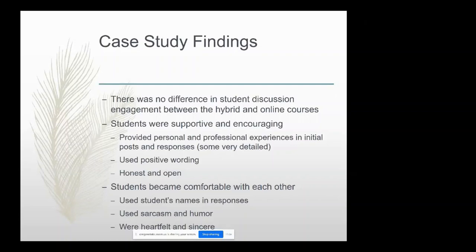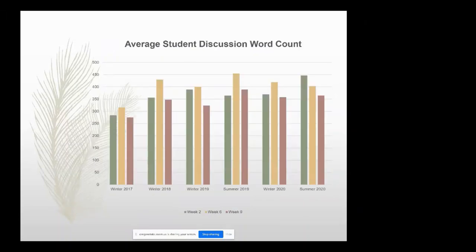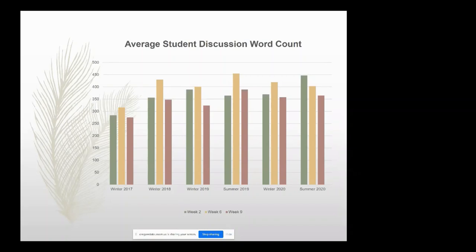I looked at average word count for discussion across weeks two, six, and nine. I didn't want week one because everyone's learning and it's kind of a mess, and I didn't want week ten because it's right before finals. I did week six because it's in between. I sort of thought students would write more and more as the term went on. What I found is they write more in the middle at week six, but then it falls down at the end — that could just be end-of-term stress. The only one with a different pattern is last summer, which was really high at the beginning and then tapered off — I think that could be related to COVID and they were just exhausted.